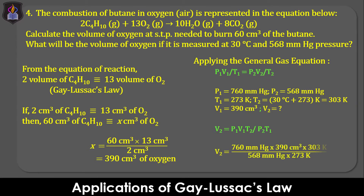Making V₂ the subject of the formula, substituting the values and evaluating the equation, we obtain 579.2 cm³ as the volume of oxygen required to burn 60 cm³ of butane at 30 degrees Celsius and 568 mmHg pressure.